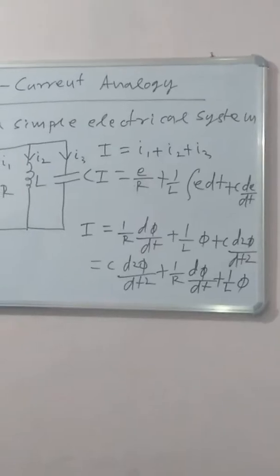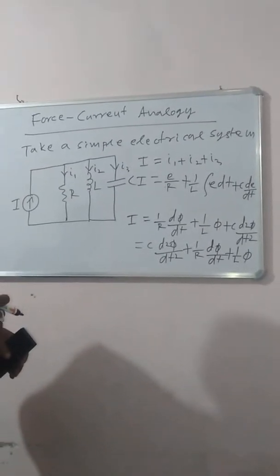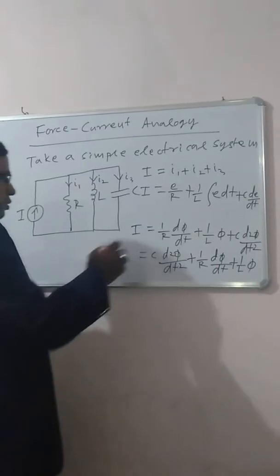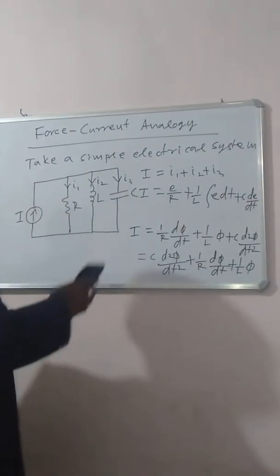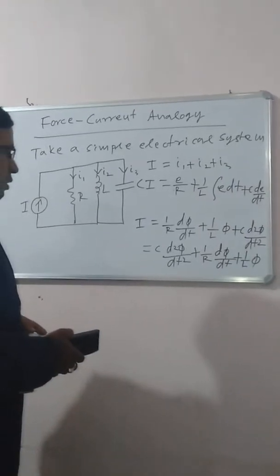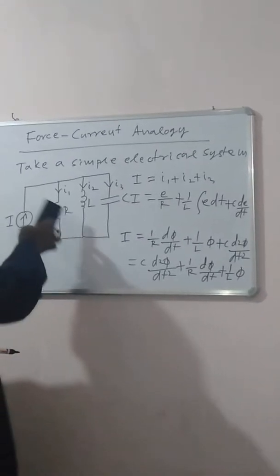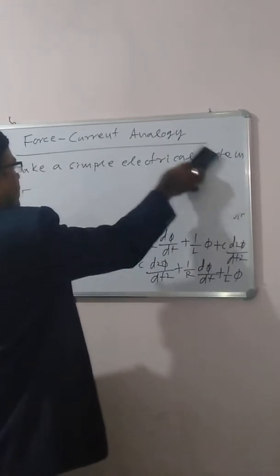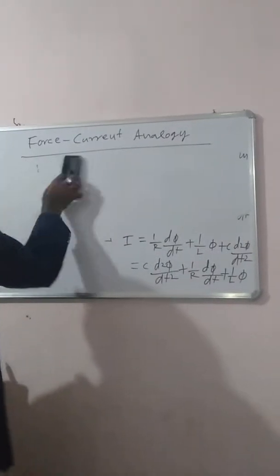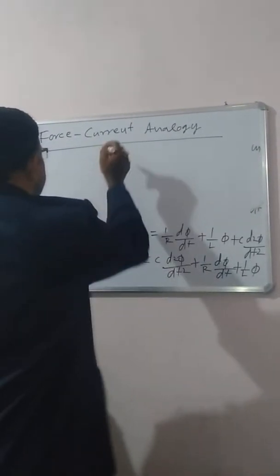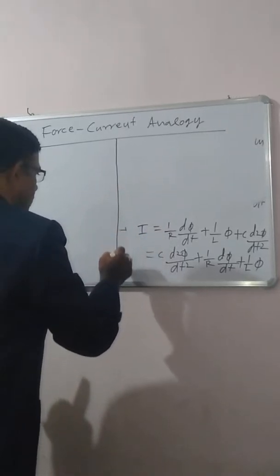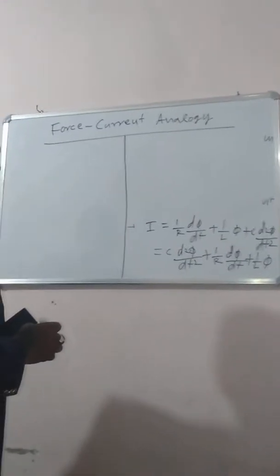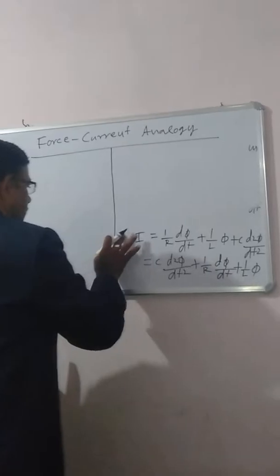As I already told you, analogous systems are those whose differential equations are in identical forms. If we compare this electrical equation with the mechanical translational system equation, we find that these two equations are in identical form. Therefore, we can say they are analogous to each other. Let us now find out the analogy between force and current in the mechanical translational system and electrical system.